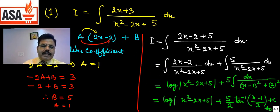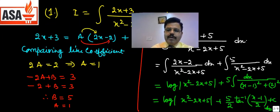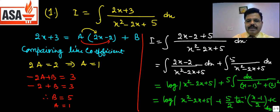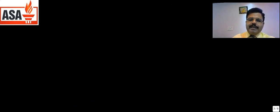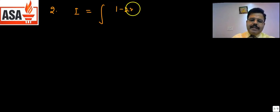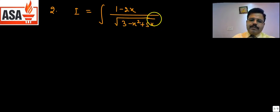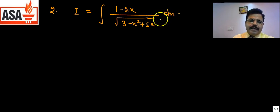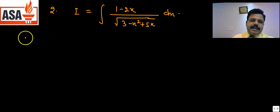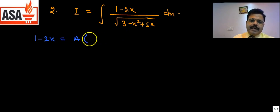तो question solve करने के लिए इन सारी बातों को ध्यान में रखना होगा — कि question किस type का है। अगर किसी particular type का है तो उसको solve करने का particular तरीका ही होगा, उसी तरीके को adopt करने में आसानी रहेगी। अब एक और question लेते हैं: 1 - 2x divided by square root of (3 - x² + 5x) dx।